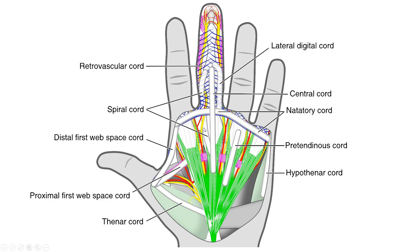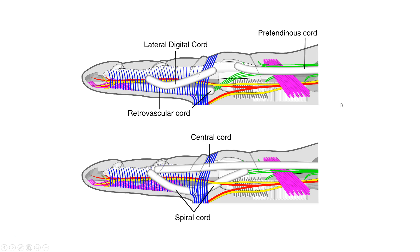Out in the finger, because it's three-dimensional, we can have a variety of cord types: lateral, superficial, a spiral cord beginning deep and passing under the neurovascular bundle ending up superficial and displacing the bundle, and deep to that a retrovascular cord. In oblique direction: pre-tendinous, central, lateral, lateral digital, retrovascular, and spiral.